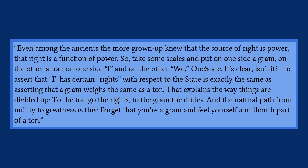I argue this helps us understand Zamyatin. It is very much in line with the justification D-503 gives for why the people of We, the numbers, view themselves as we rather than as individuals. He says: "Even among the ancients, the more grown-up knew that the source of right is power — that right is a function of power. So take some scales and put on one side a gram, on the other a ton. On one side, I, and on the other, we, One State. To assert that I has certain rights with respect to the state is exactly the same as asserting that a gram weighs the same as a ton. To the ton go the rights, to the gram the duties. The natural path from nullity to greatness is this: forget that you're a gram and feel yourself a millionth part of a ton."